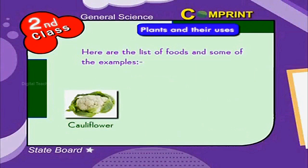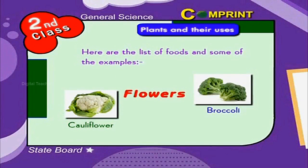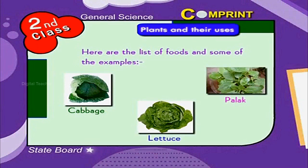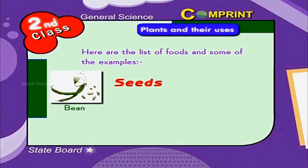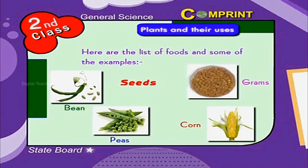Cauliflower and broccoli are the flowers of the plants. Cabbage, spinach and lettuce are leaves of the plants. Seeds like beans, peas, corn, etc. are also edible.